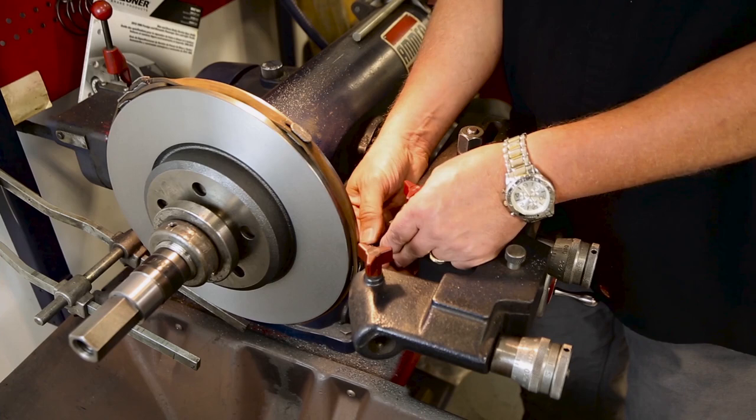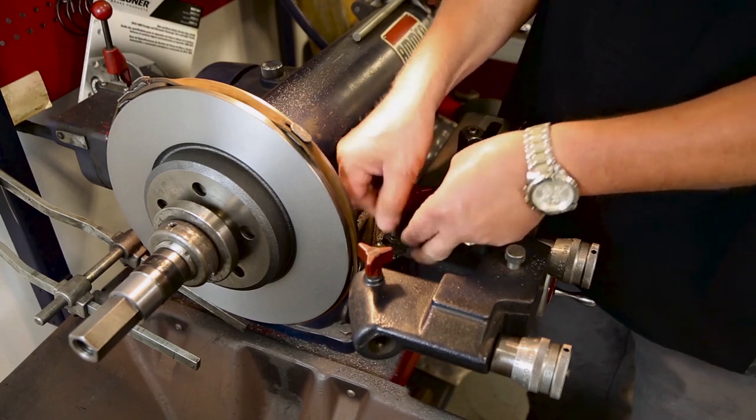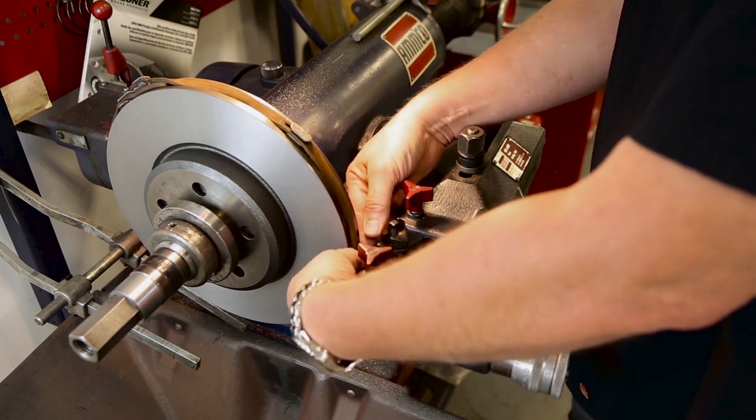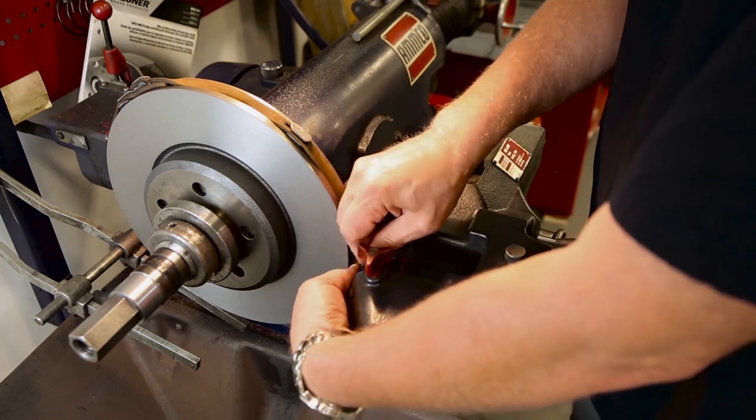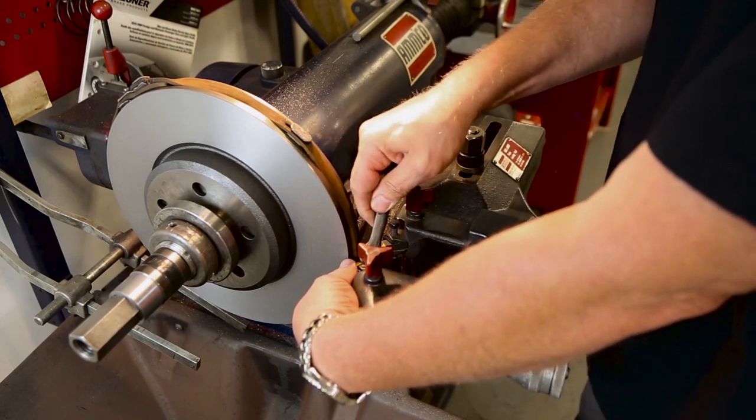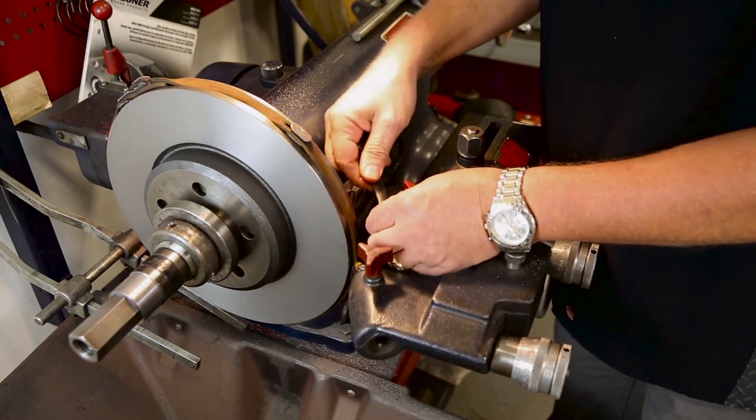Go ahead and put our tool bits into our fixture and lock them down. Triangular bit on the inside and we'll put our round bit on the outside. We have them in place, lock the set screws.